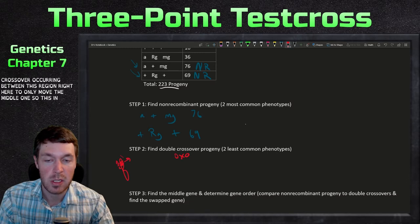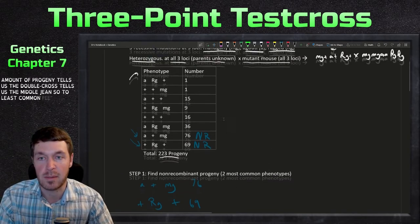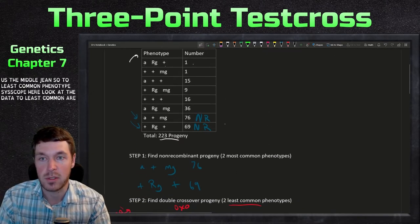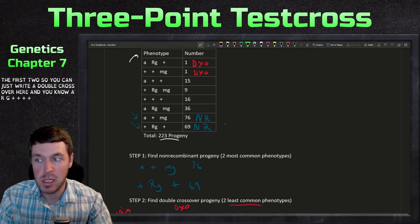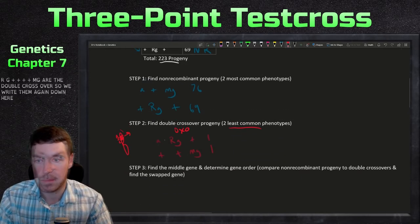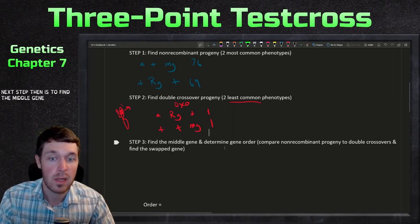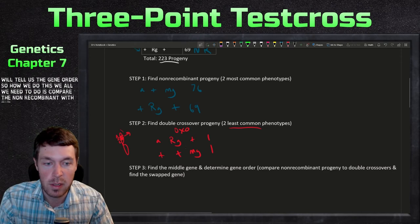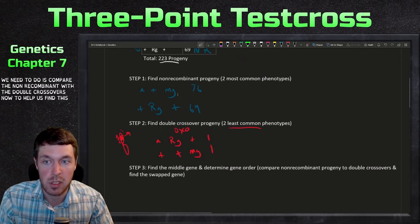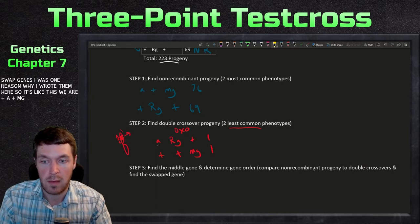The fewest number of progeny tells us the double crossovers, and that tells us the middle gene. The two least common phenotypes are a-rg-plus and plus-plus-mg, which are the double crossovers. The next step is to find the middle gene by comparing the non-recombinants with the double crossovers to find the swapped gene.